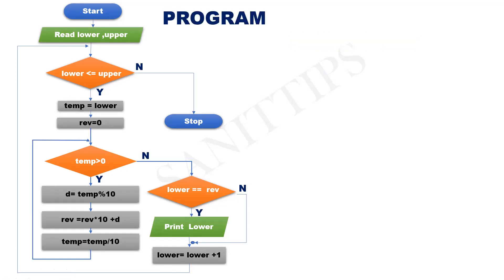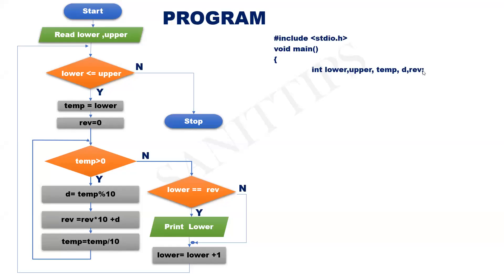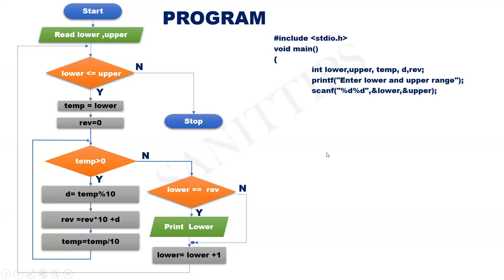Now let us convert this flowchart to program code. Hash include stdio.h, void main, open curly brace. Declare variables: lower, upper, temp, reverse, and D. First we need to read the lower and upper range. Printf: enter lower and upper range. Scanf %d, %d for lower and upper. Next it is a condition — it is part of a loop, so I am going to use a while loop here: while lower less than or equal to upper, open curly brace. Go to the yes part.